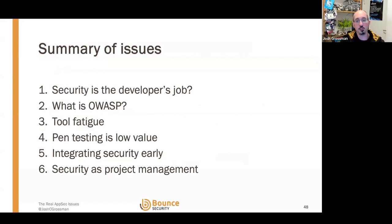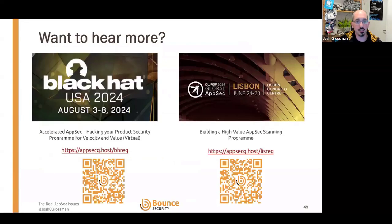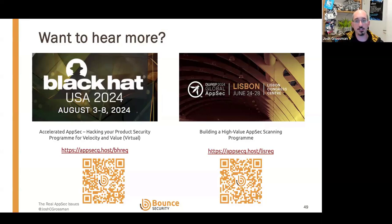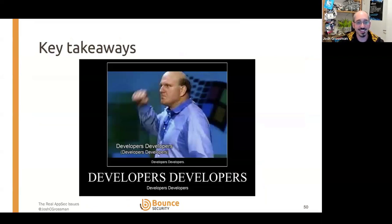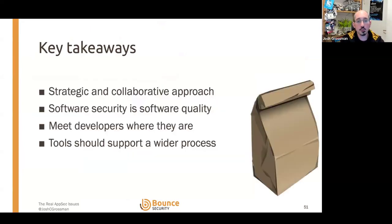So those are the six key issues. Hopefully that gives you a slightly different perspective from the technical side, and gives you things to think about in your organisation. Key takeaways: developers are super important, and we need a strategic and collaborative approach — tools are part of this, but process and people are highly critical as well. We want to enforce the idea that software security is software quality — just another aspect of the quality of software. Meet developers where they are: interact with and build into their processes, aligning with them rather than dragging them into what we think they should do.